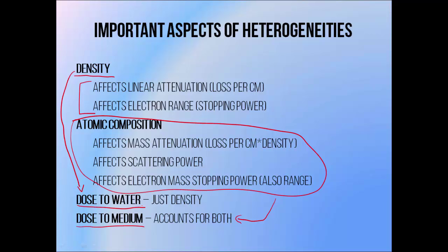Most treatment planning systems in the past have calculated only in terms of dose to water, meaning that they ignore the atomic composition of different materials like bone inside a patient and assume that it's the same as water. Pencil beam dose calculation algorithms and anything older use this approach. They account for the effects of density on dose distributions, but they don't always do it accurately in all cases, as I'm going to describe over the next few slides.